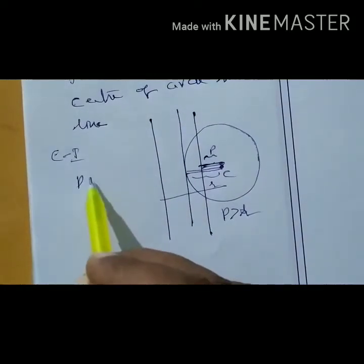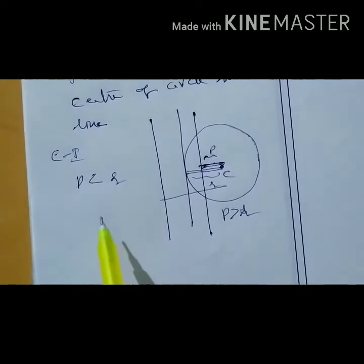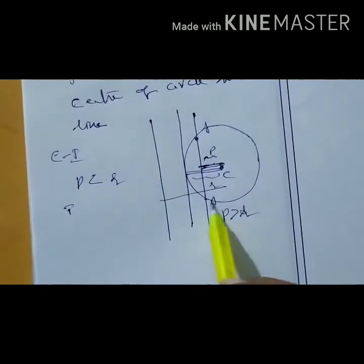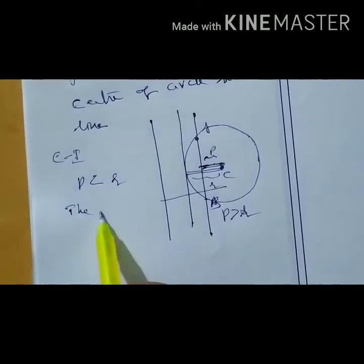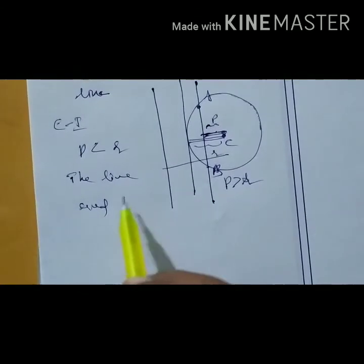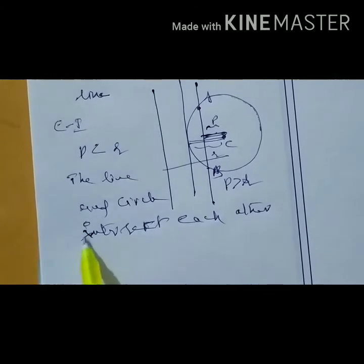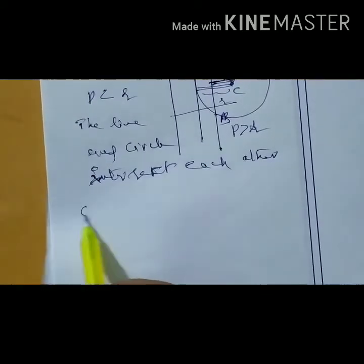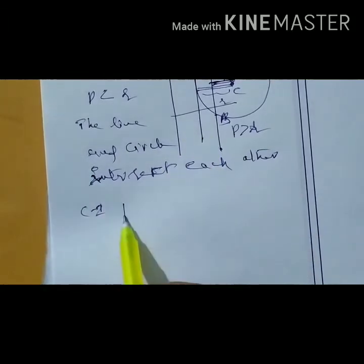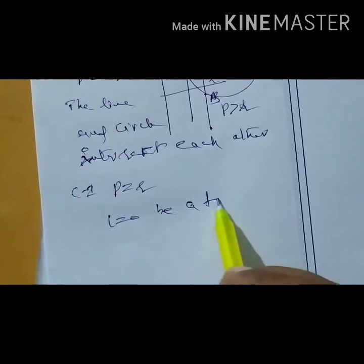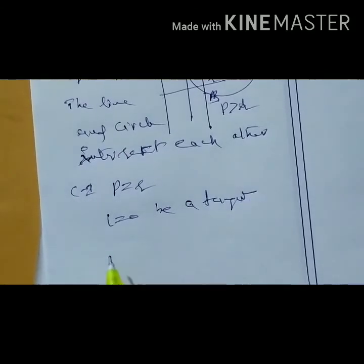Case one: if p is less than radius, then the line and the circle intersect in two distinct points. Case two: if p is equal to r, then the line L = 0 is a tangent to the circle.